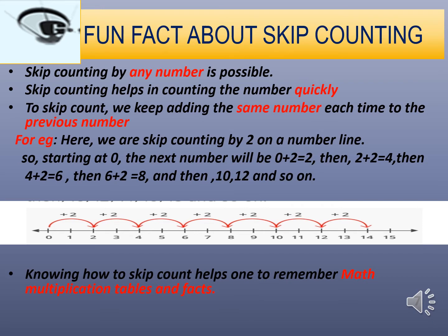Let's discuss a few fun facts about skip counting. First, skip counting by any number is possible, which means you can skip by any number — for example, two, five, six, seven, one hundred, one hundred one, fifty, two hundred, twenty-five, ninety-nine — any number you pick and you can do skip counting with it. Second, skip counting helps in counting numbers quickly.